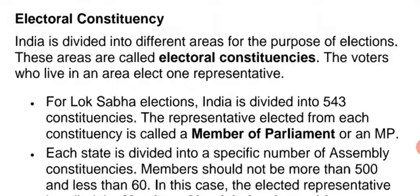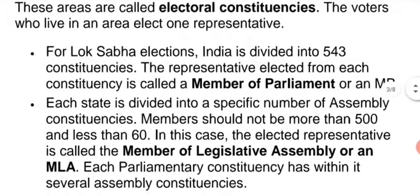Now we will read about the points that make Indian elections democratic, and also about the system in which elections are held in India. For Lok Sabha elections, India is divided into 543 constituencies. As we read in the last chapter, Parliament has two houses — Lok Sabha and Rajya Sabha. Lok Sabha elections happen through direct votes of the people. India is divided into 543 constituencies for Lok Sabha elections, meaning there are 543 members from the whole country. The representative elected from each constituency is called a Member of Parliament, or MP.